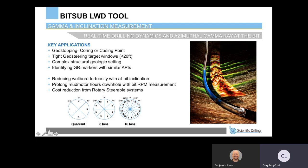As mentioned, this is the bit sub quadrant image where we have 90-degree increments. Then we have the 8-bin and also 16-bin as well.